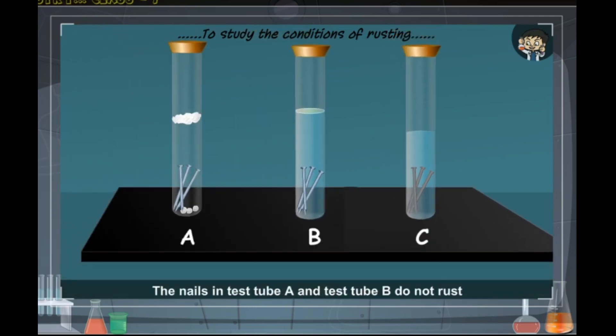Inference: The nails in test tube A and test tube B do not rust because there is air in test tube A but no water, and in test tube B there is water but no air. The nails in test tube C get rusted because both the conditions necessary for rusting, that is air and moisture, are available in it.